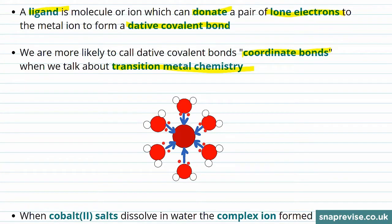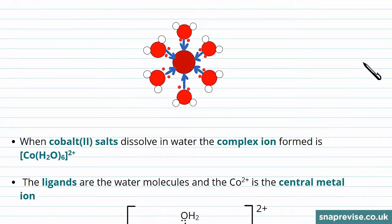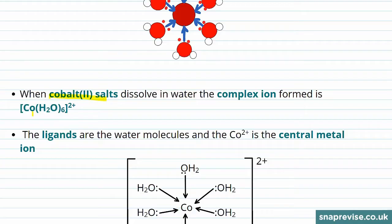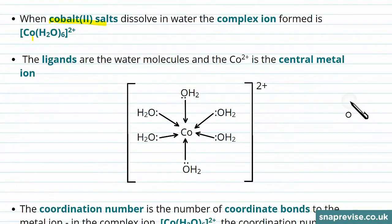So now we can fully describe a complex ion. It's a central transition metal ion surrounded by ligands, which in this case are water, and they donate these lone electrons to the metal ion to form covalent bonds, which we call coordinate bonds because the ligand provides both electrons. When cobalt salts dissolve in water, the complex ion formed is cobalt — Co — and then in brackets we show the ligand and how many of them there are: six. The square brackets indicate that it's a complex ion, and we show the charge outside the brackets.